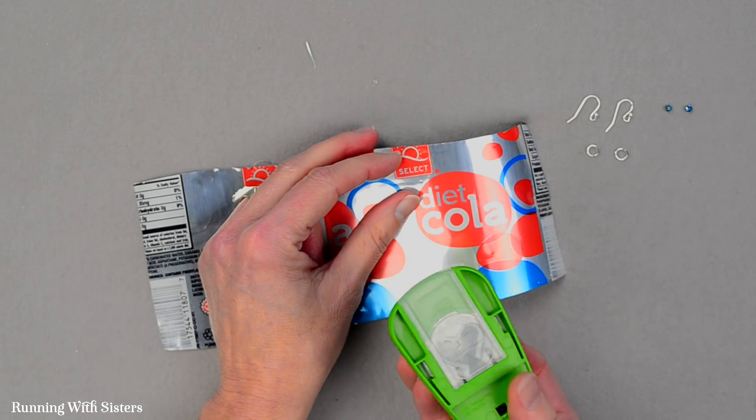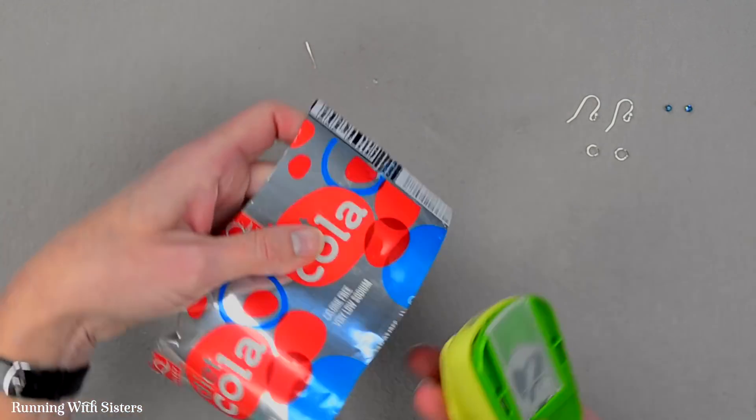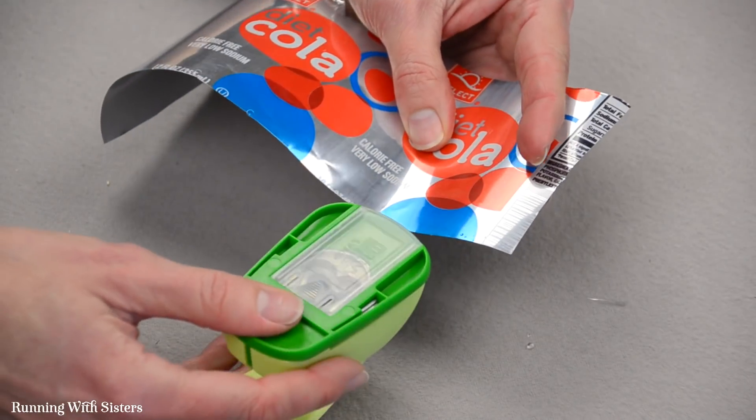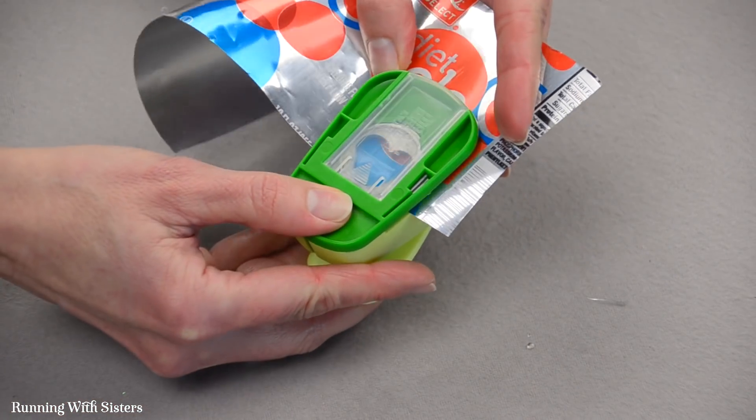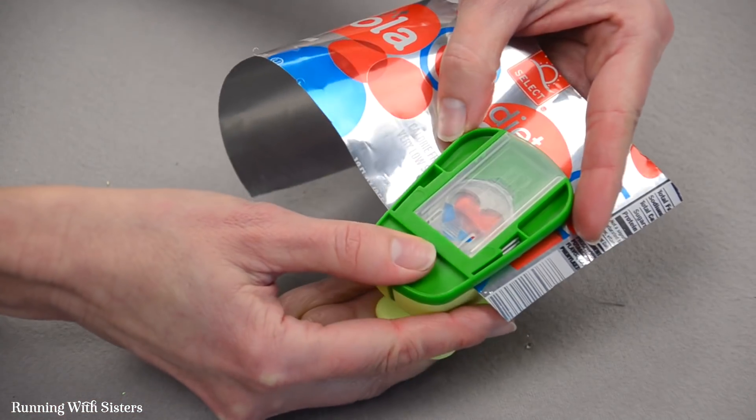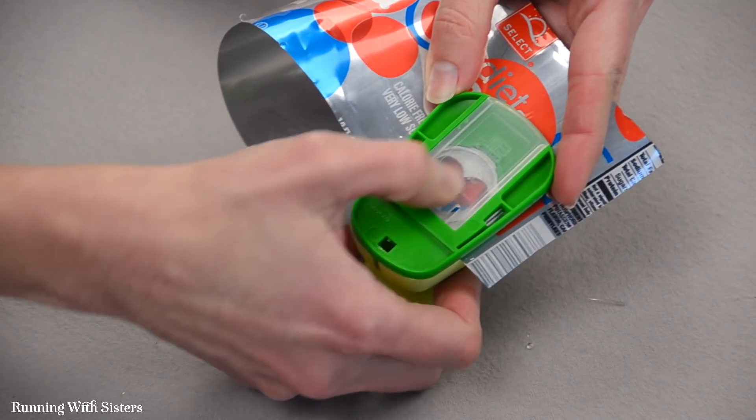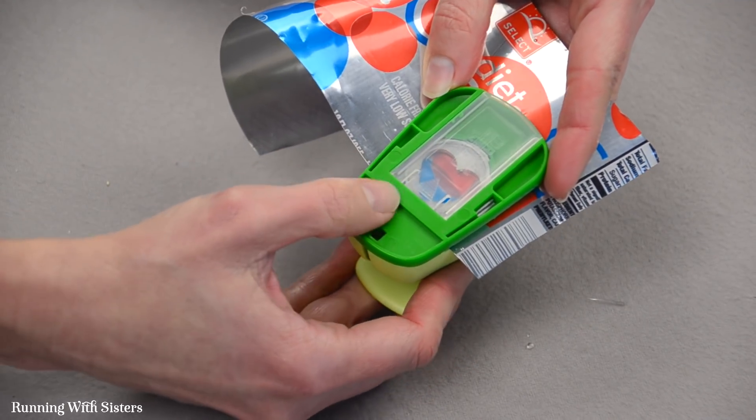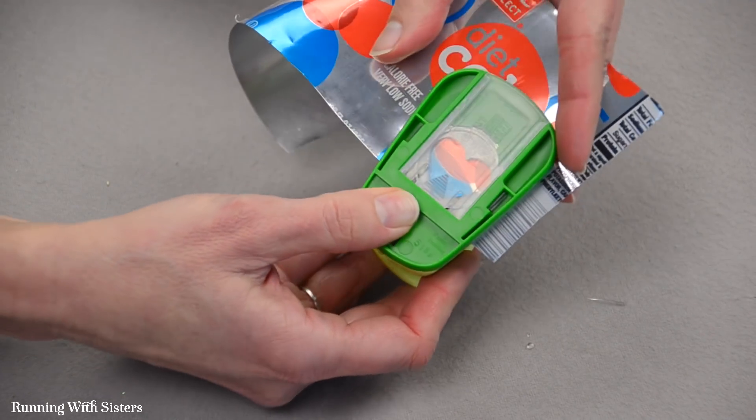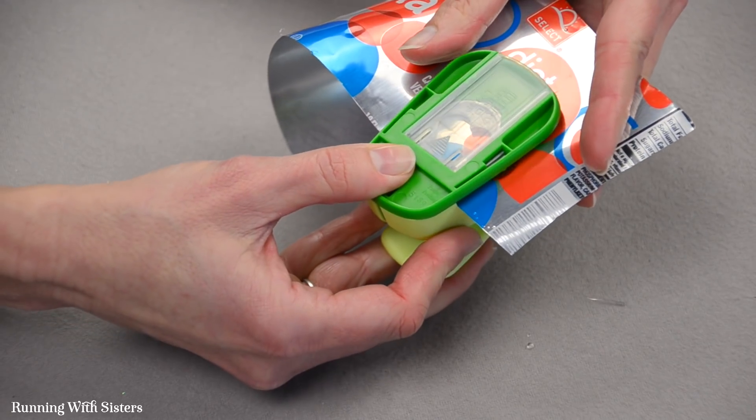And I'm going to slide the edge of my can into my punch like that so that I can see through the little back here. I can move this around to pick out what I want my design to be.